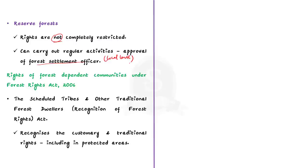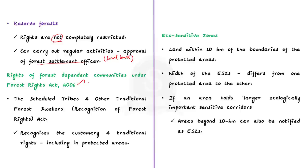What about the rights of forest dependent communities provided under Forest Rights Act 2006? The Scheduled Tribes and Other Traditional Forest Dwellers Recognition Act 2006, also known as the Forest Rights Act, recognizes the customary and traditional rights of forest dwellers on forest land including protected areas. The rights of scheduled tribes to collect honey and forest wood from protected areas are given by this act. Coming back to eco-sensitive zones, the land within 10 kilometers of the boundaries of protected areas such as national parks and wildlife sanctuaries is to be notified as eco-sensitive zones.